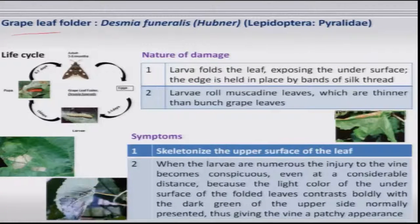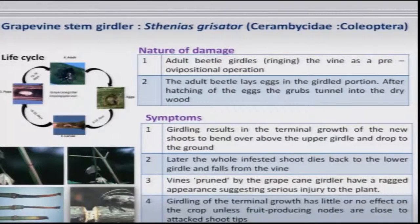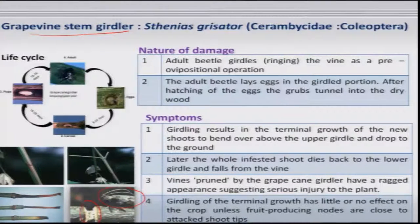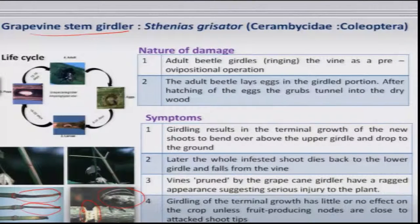The leaf folder is an occasional and minor pest; the larvae fold or roll the leaves and scrape the internal content, and in severe form this affects photosynthetic activity and plant development. The stem girdle beetle causes serious damage occasionally, with the peculiar habit of cutting the twigs of the vines and laying eggs there, resulting in drying up of the shoot, affecting inflorescence development and fruit setting.